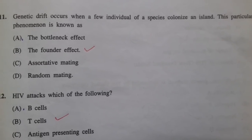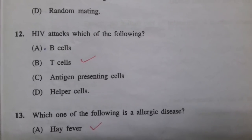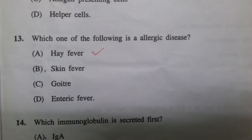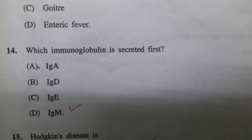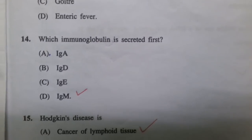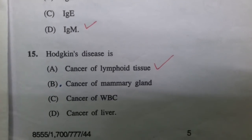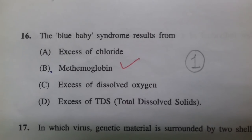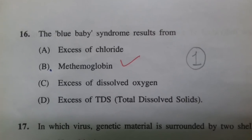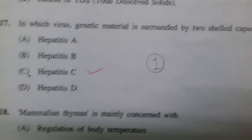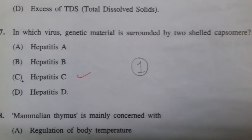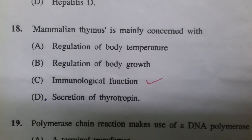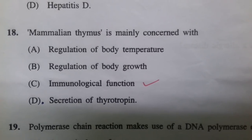HIV attacks T-cells. An example of an allergic disease is hay fever. The immunoglobulin secreted first is immunoglobulin M. Hodgkin's disease is a cancer of lymphoid tissue. The blue baby syndrome results from methemoglobin. The virus whose genetic material is surrounded by two-shelled capsomers is adenovirus. The mammalian thymus is mainly concerned with immunological function.